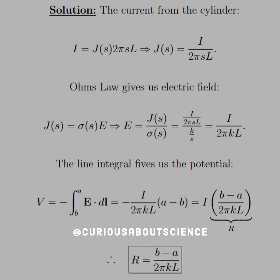All right, let's go ahead and do it. Once we solve for E, we get I over 2πkL. Then the line integral of E gives us the potential, which we can quickly solve—that's just a minus b. And then apply the negative, so you switch b and a, and you notice that you have V equals I times R.